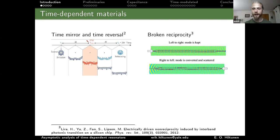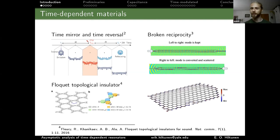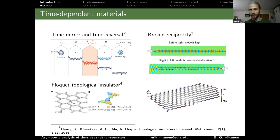If material parameters depend on time, you can break time-reversal symmetry. Classical waves usually exhibit reciprocity — sending a wave in one direction or the other gives the same response. Time-dependent material parameters can break this reciprocity, giving different responses depending on the direction. Another currently interesting topic is Floquet topological insulators, which arise when material parameters depend on time, giving more degrees of freedom and more exotic phenomena.